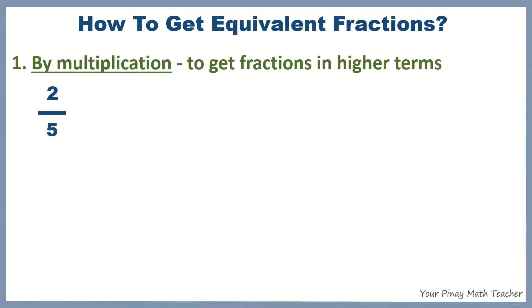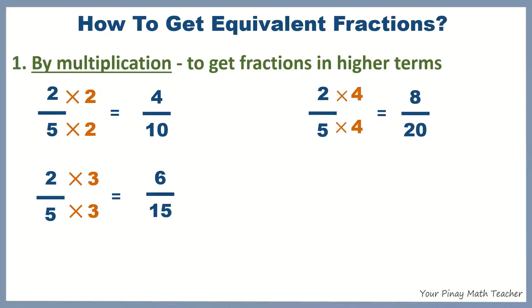Let's do this. 2 fifths, multiply both numerator and denominator by 2. You will get an equivalent fraction of 4 tenths. If you multiply both by 3, we get 6 fifteens. By 4, 8 over 20. By 5, we get 10 over 25.